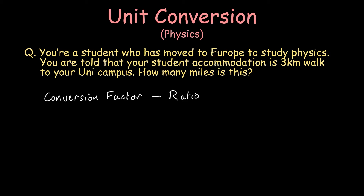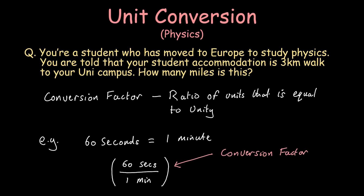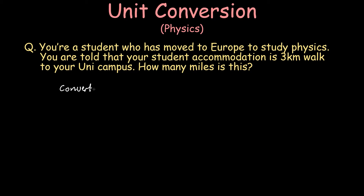Essentially, a conversion factor is a ratio of two units that is equal to unity. For example, there are 60 seconds in one minute, and 60 seconds divided by one minute equals one, or unity. Similarly, to convert inches to centimeters, there are 2.54 centimeters for every inch, and 2.54 centimeters divided by one inch is equal to unity.